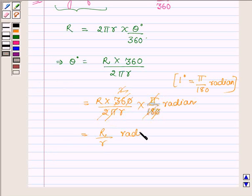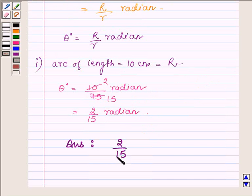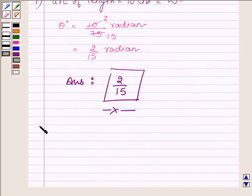The answer for the first part is complete. Let us now proceed to the second part, where we are given the length of the arc equal to 15 cm.